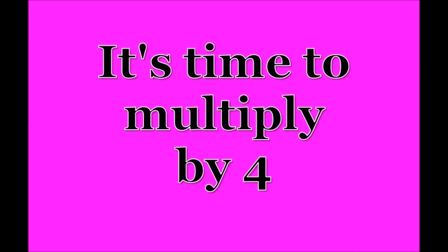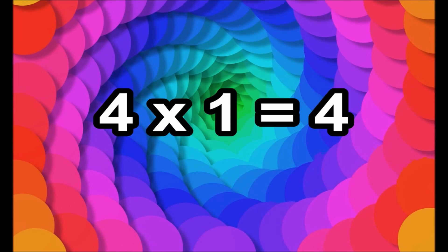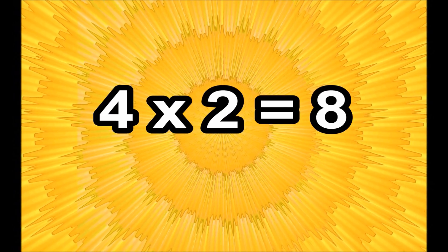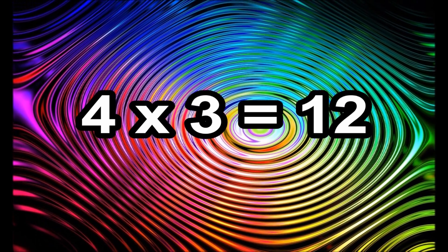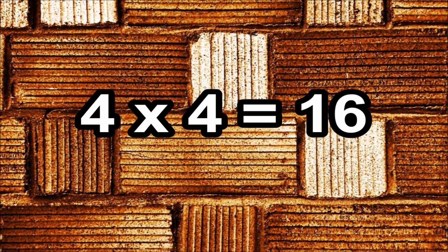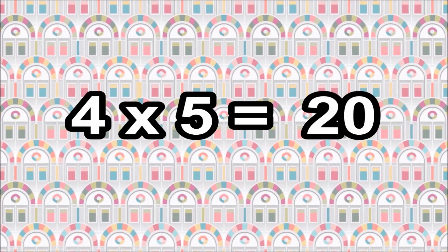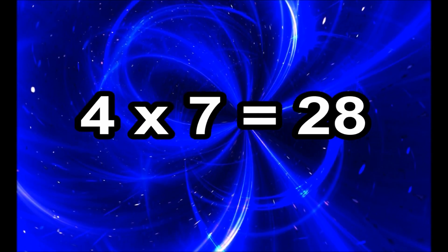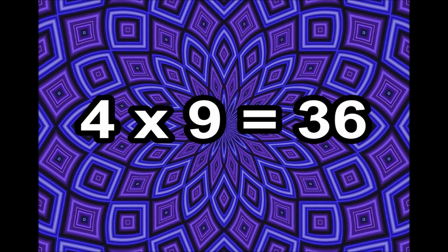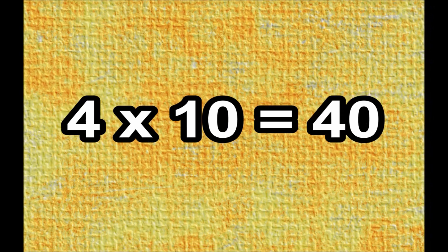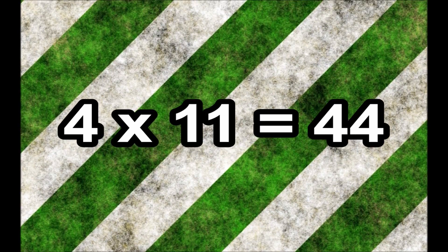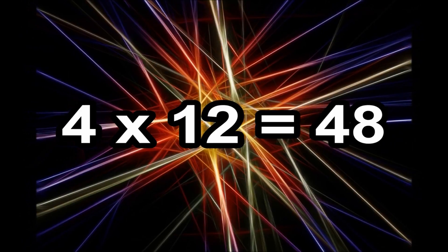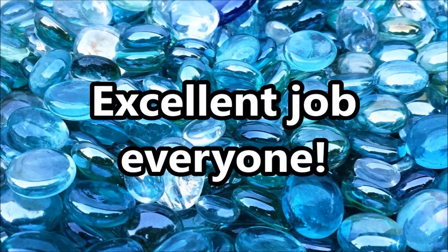It's time to multiply by four — we'll go ahead and do what you're waiting for. Four times one is four. Four times two is eight. Four times three is twelve. Four times four is sixteen. Four times five is twenty. Four times six is twenty-four. Four times seven is twenty-eight. Four times eight is thirty-two. Four times nine is thirty-six. Four times ten is forty. Four times eleven is forty-four. Four times twelve is forty-eight. Excellent job everyone!